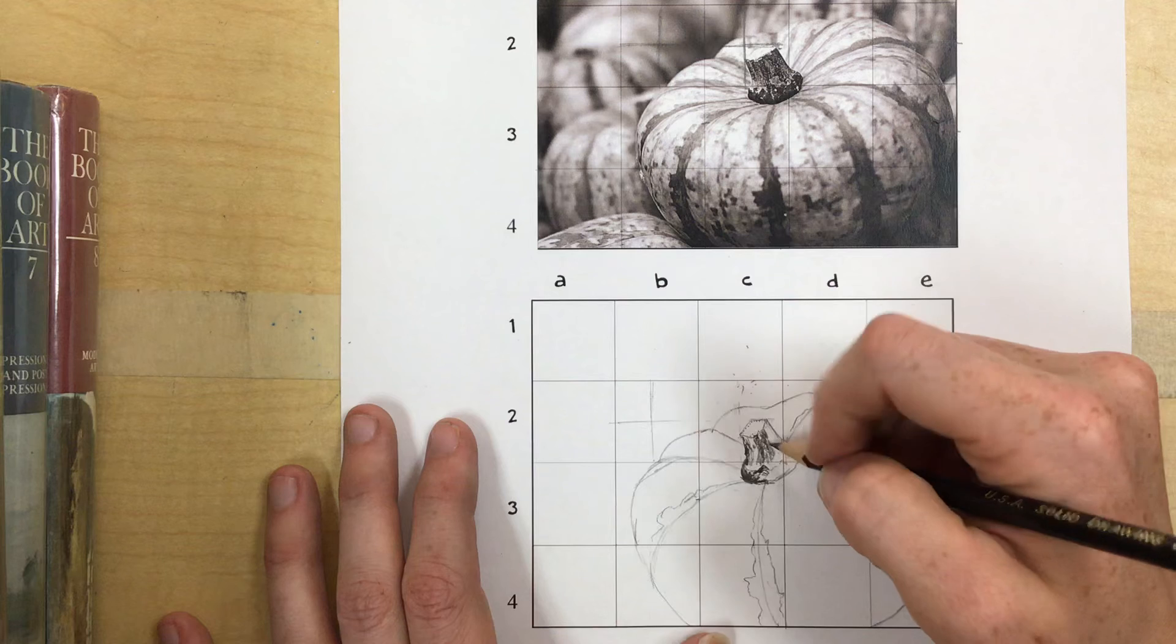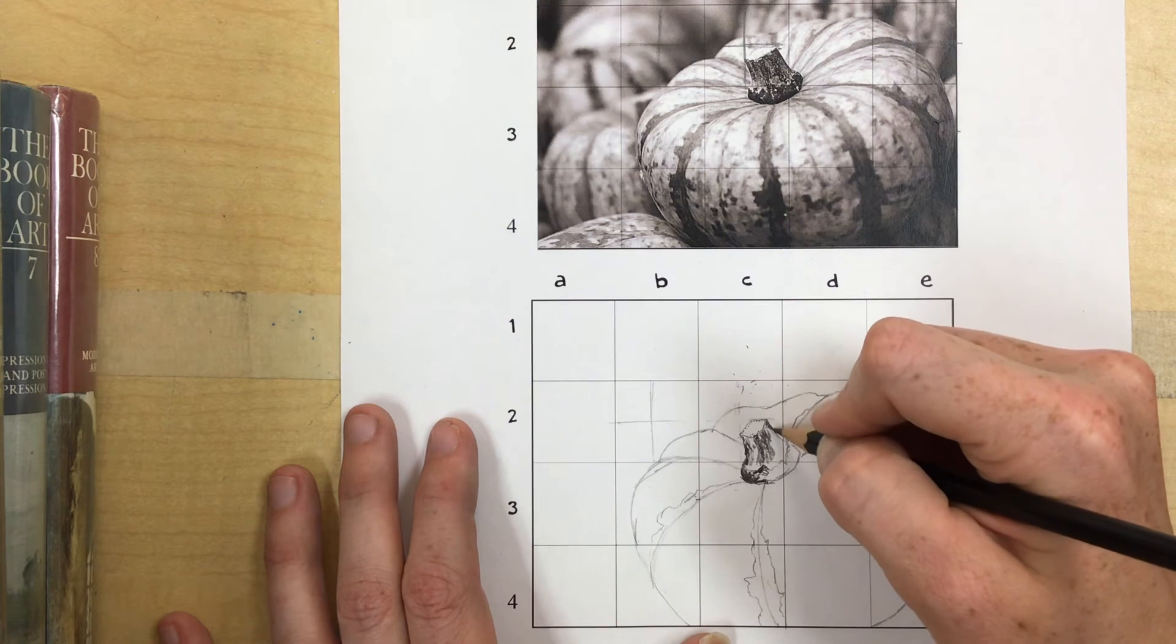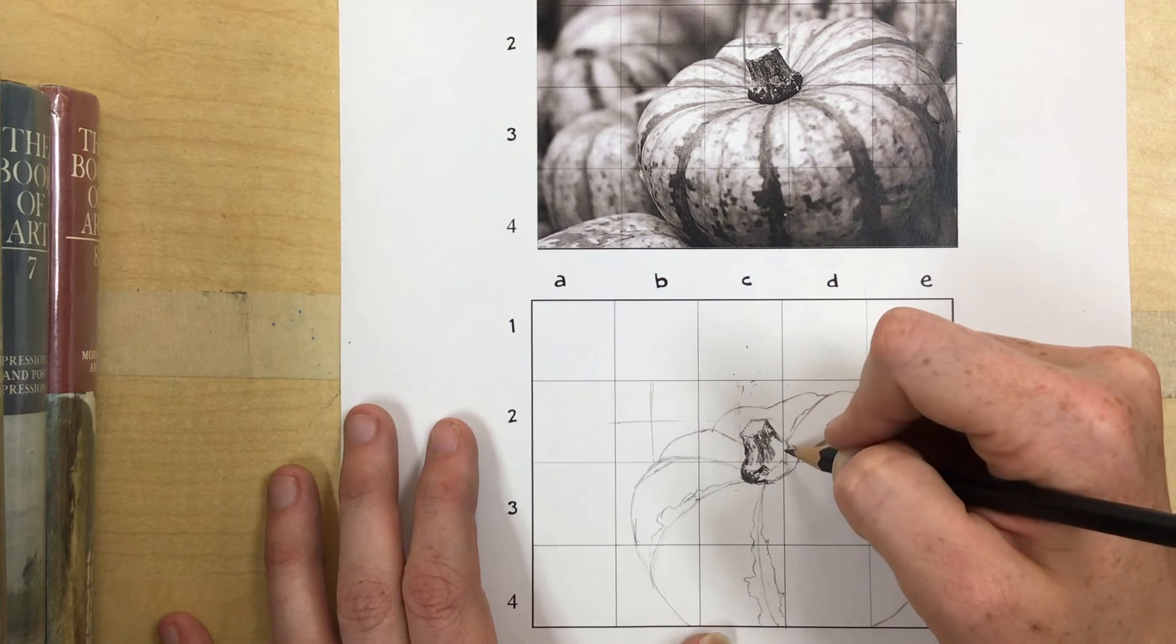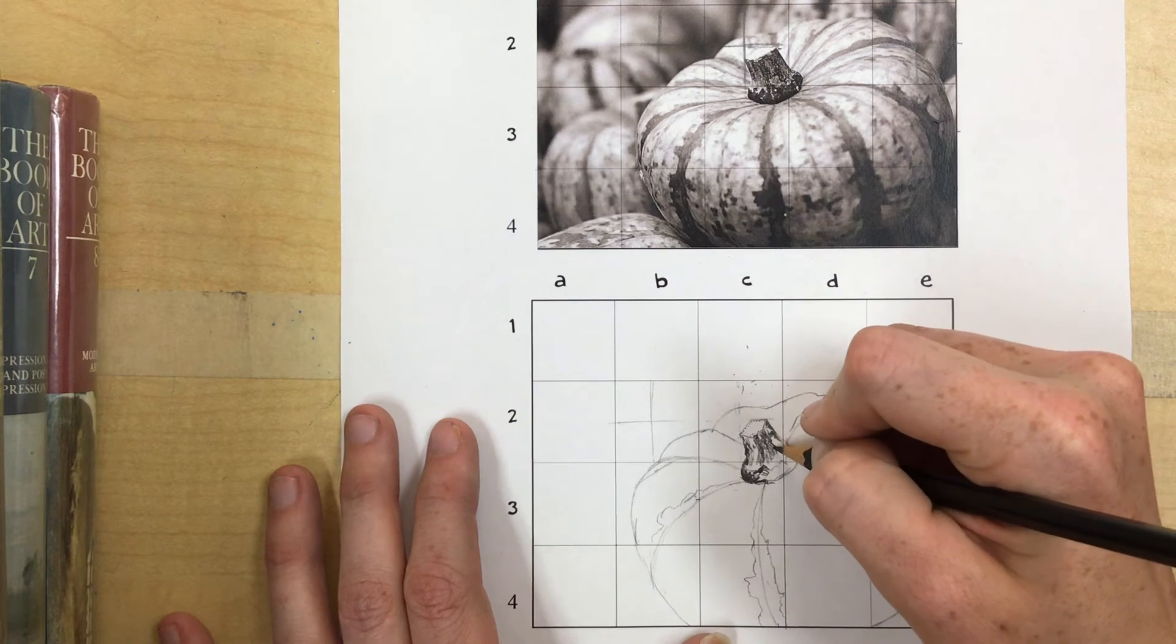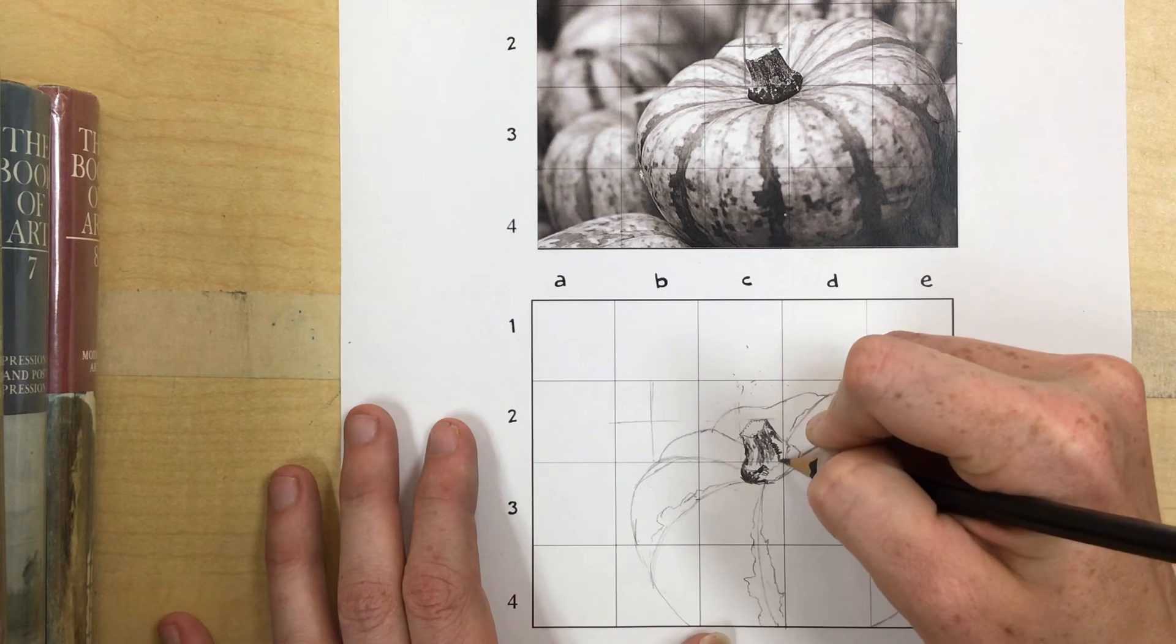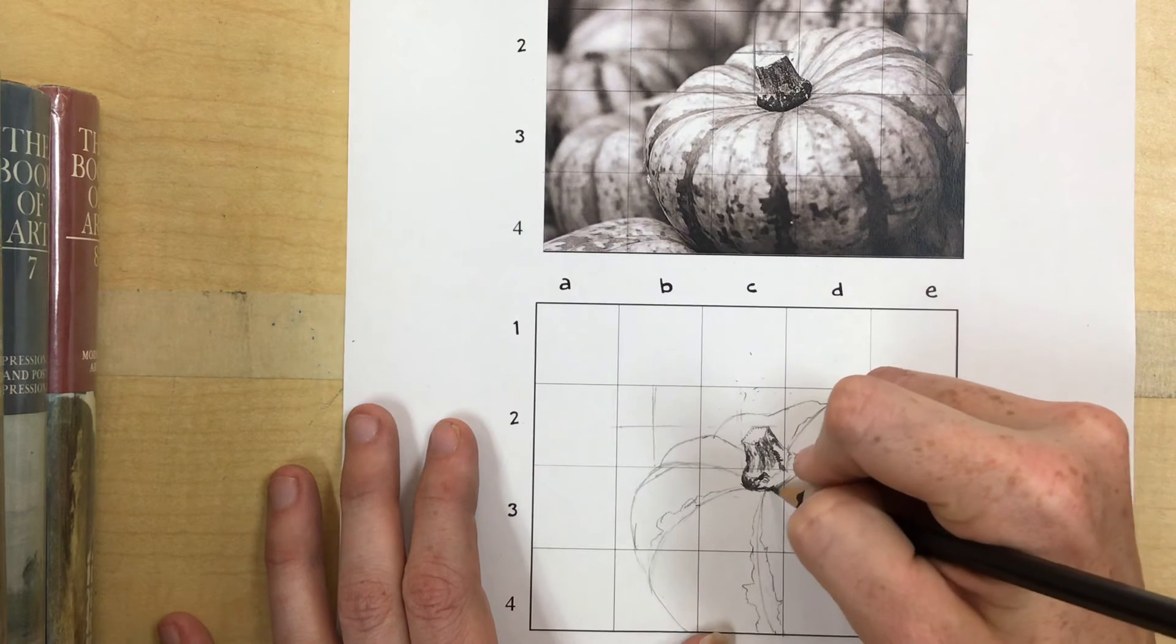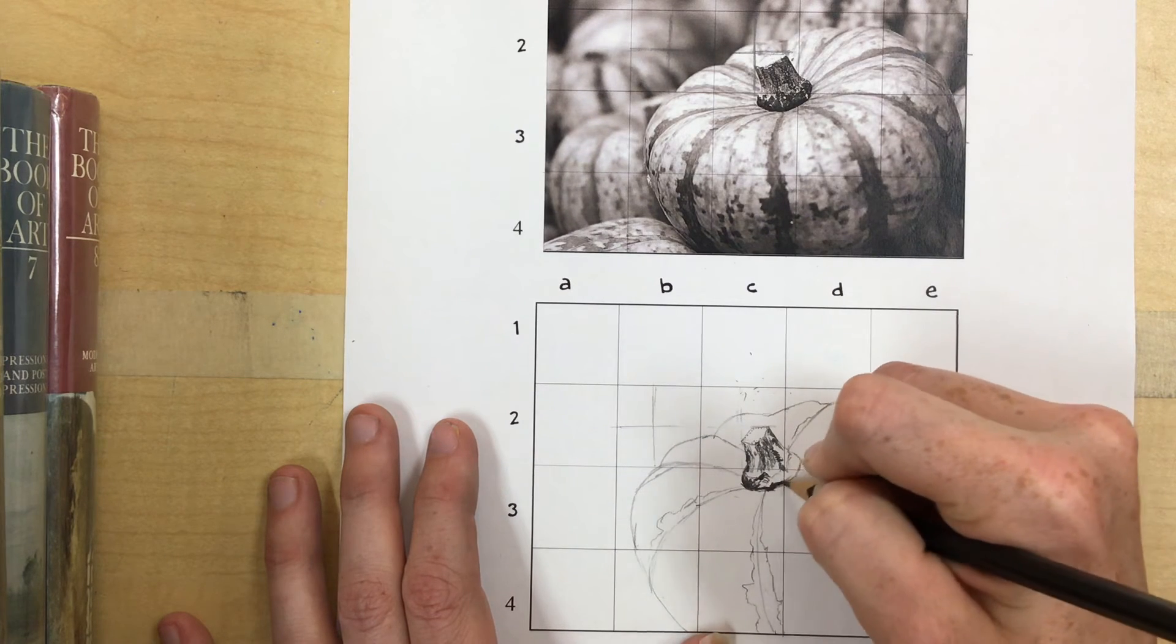I can switch back between textures or between techniques. So I'm kind of doing rendering, but then where there's more texture, maybe I don't want it to be perfectly smooth because I want to show that. So I can come back and do a little bit of scumbling or some hatching or something. You're just trying to make it match what you see.